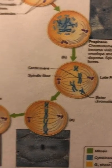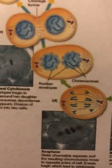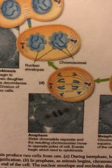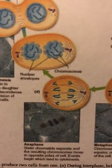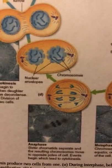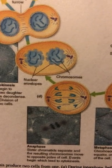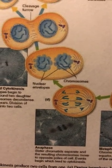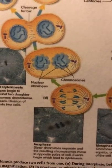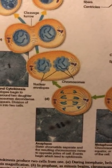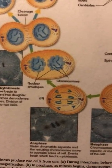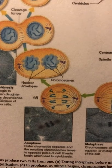Following metaphase is anaphase. In anaphase, the chromatids are now considered chromosomes, and the chromosomes move to opposite sides of the cell.